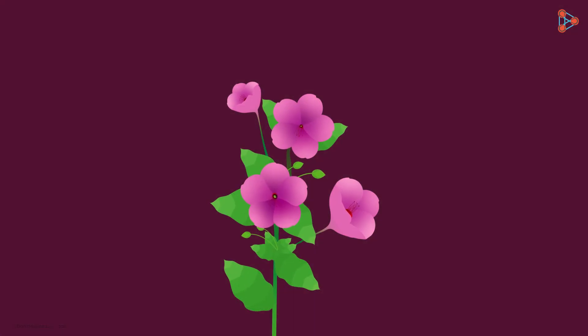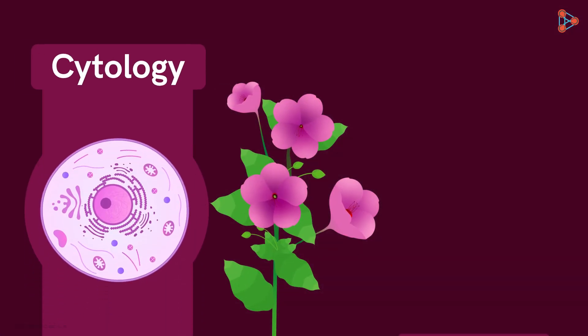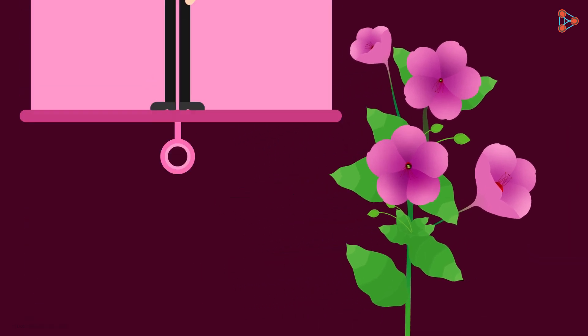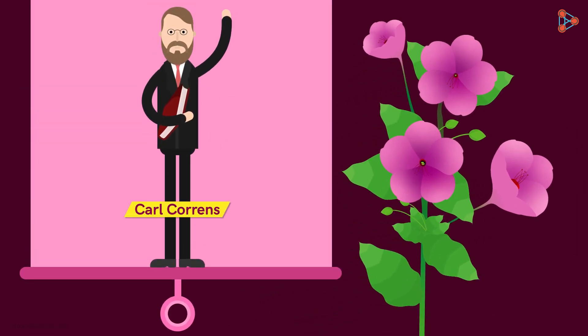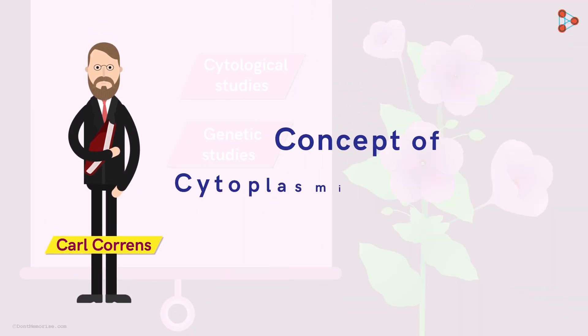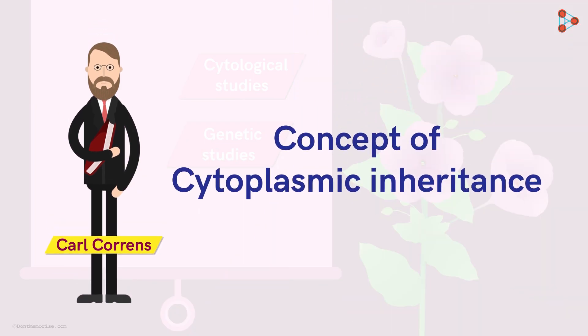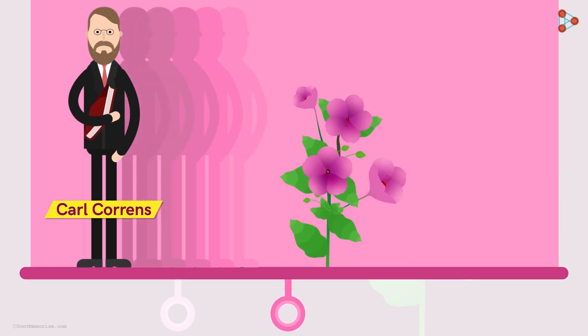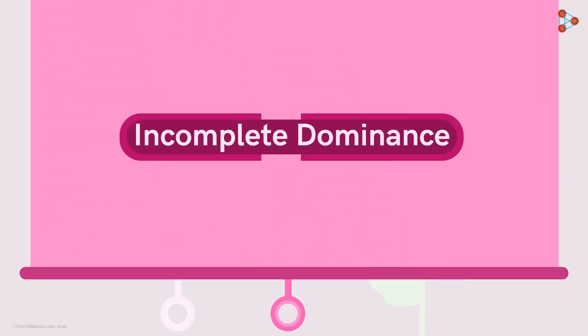These plants have immense importance in the field of cytology and genetics. They were first used by the German botanist Karl Korens for his cytological and genetic studies. They were used to explain an interesting concept of cytoplasmic inheritance. Also, these plants are used by many geneticists to study incomplete dominance.